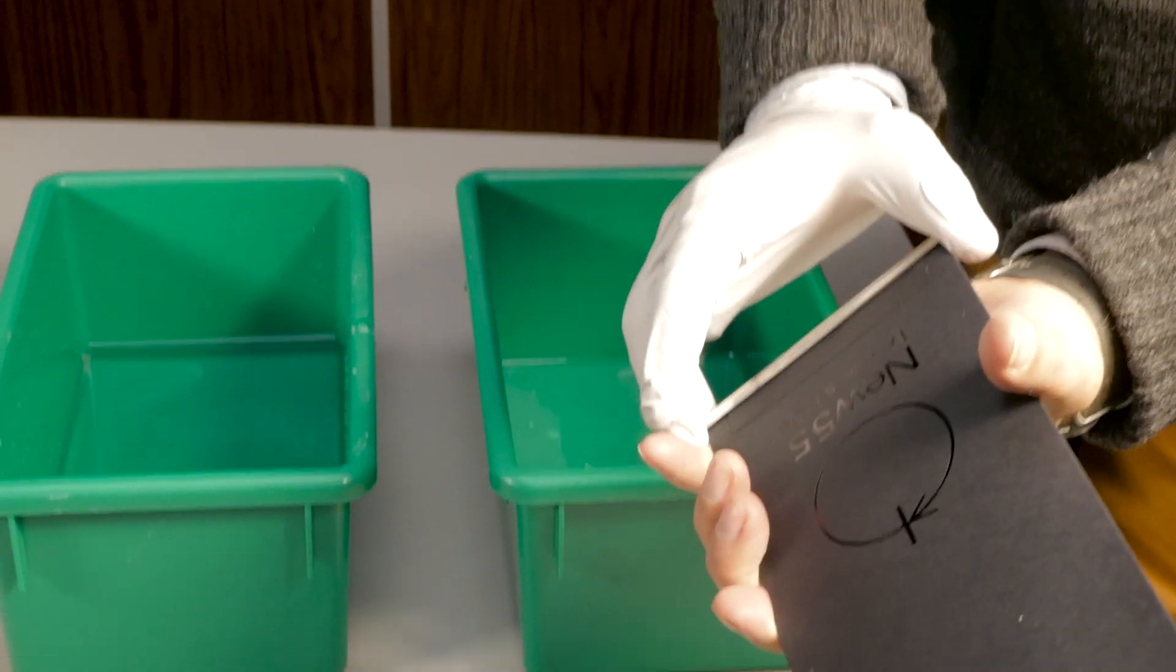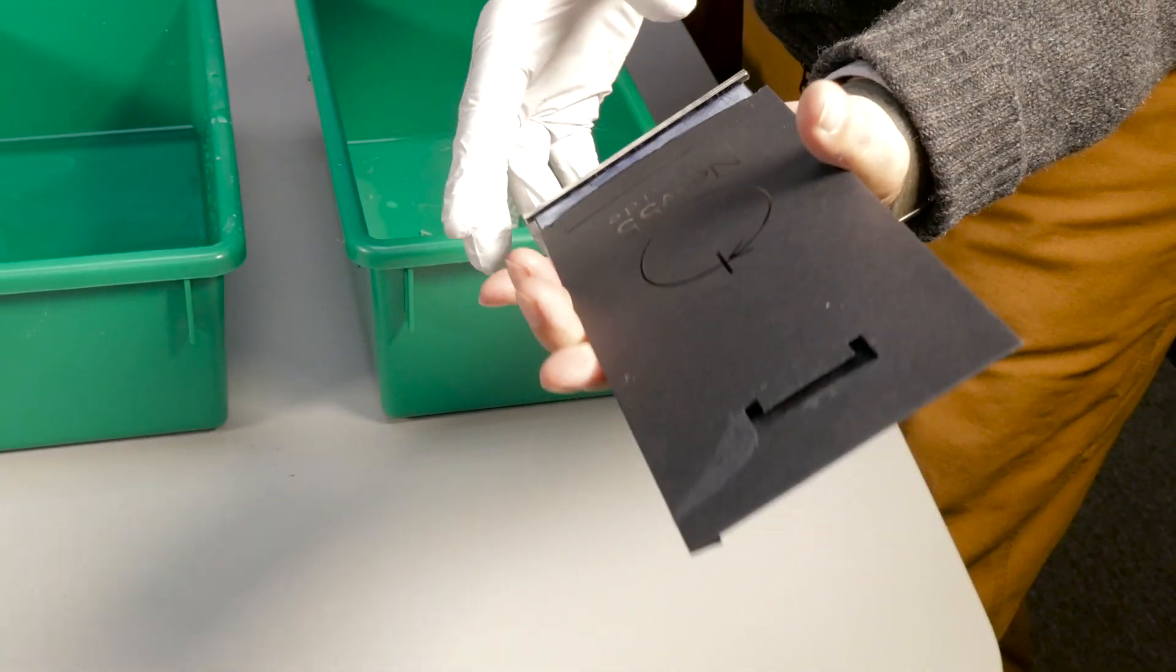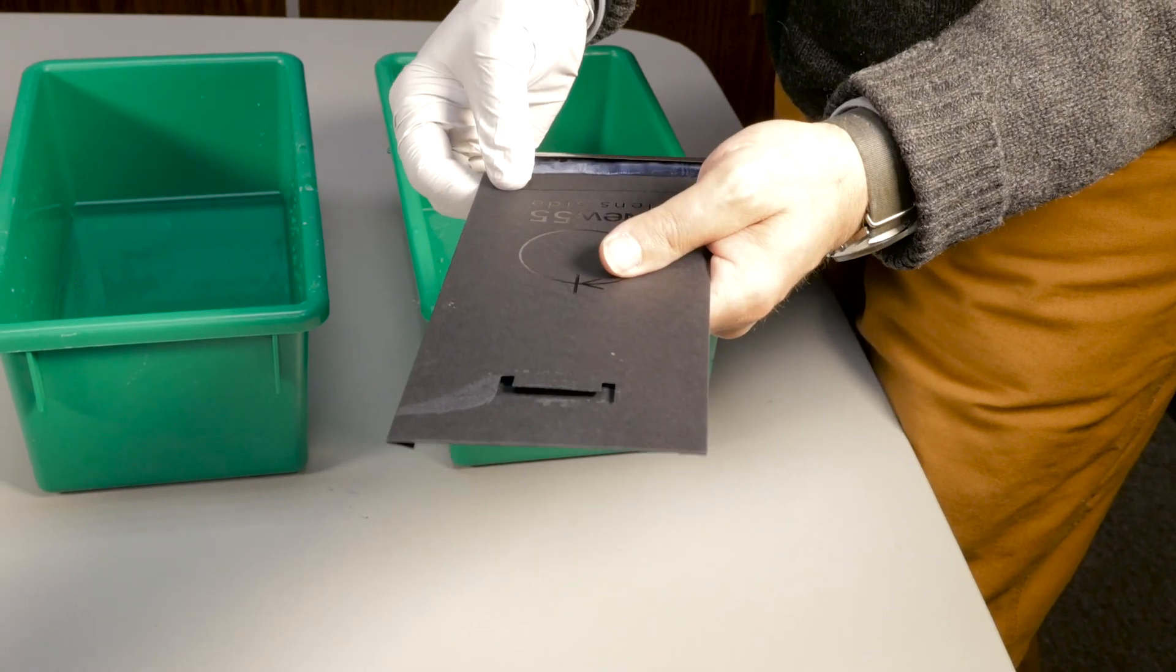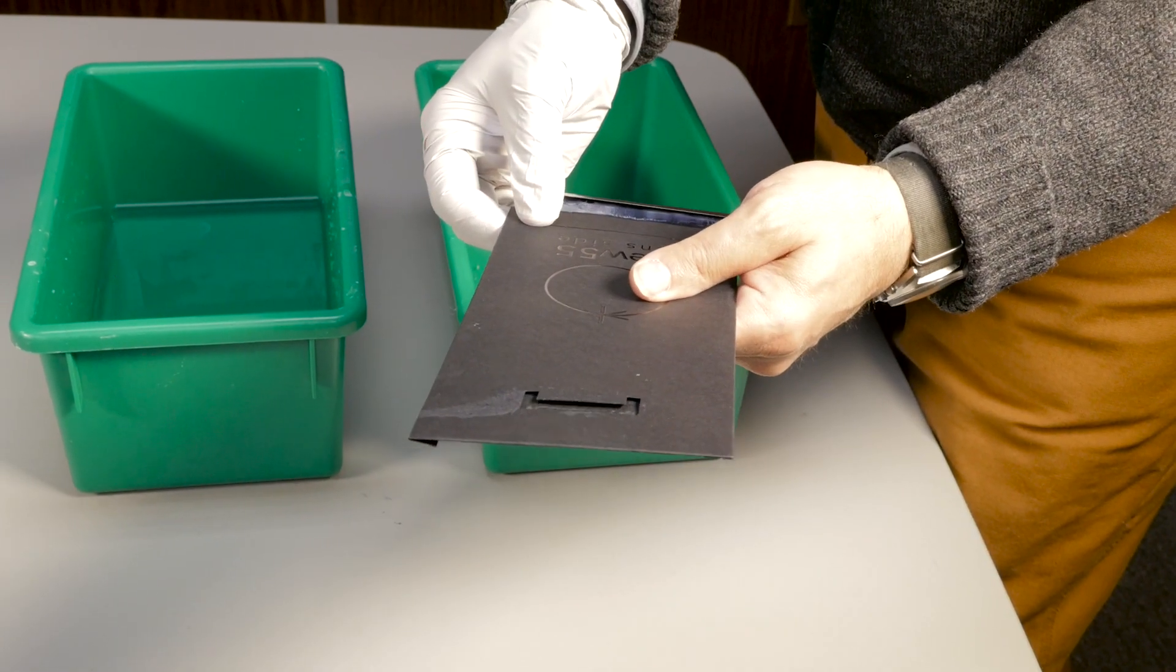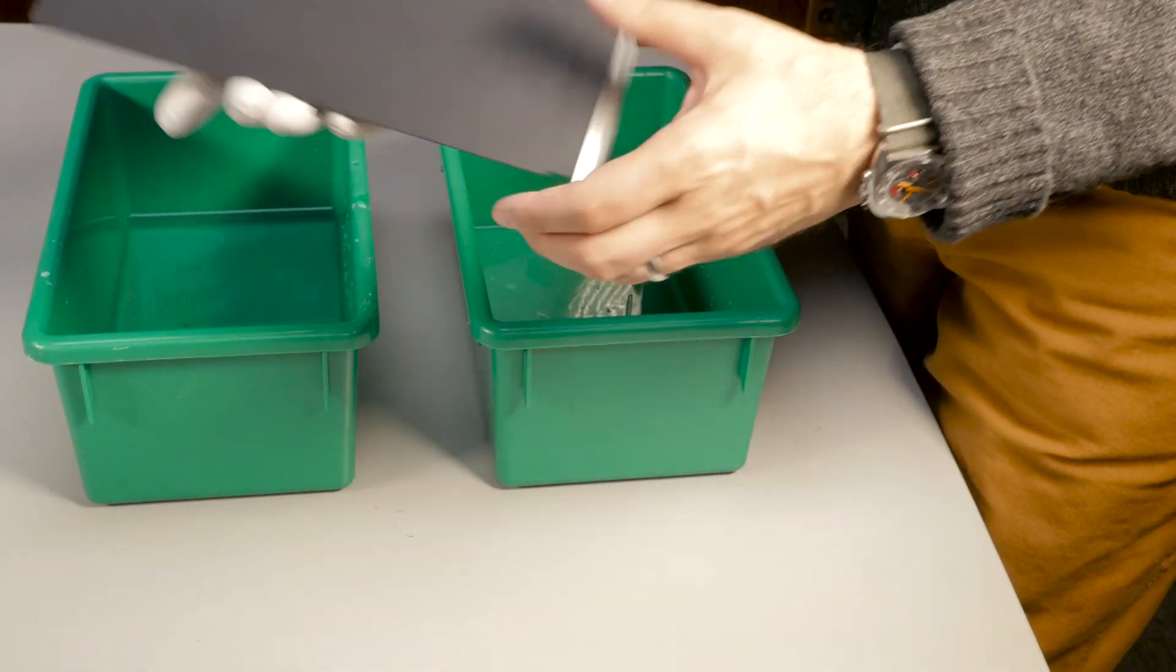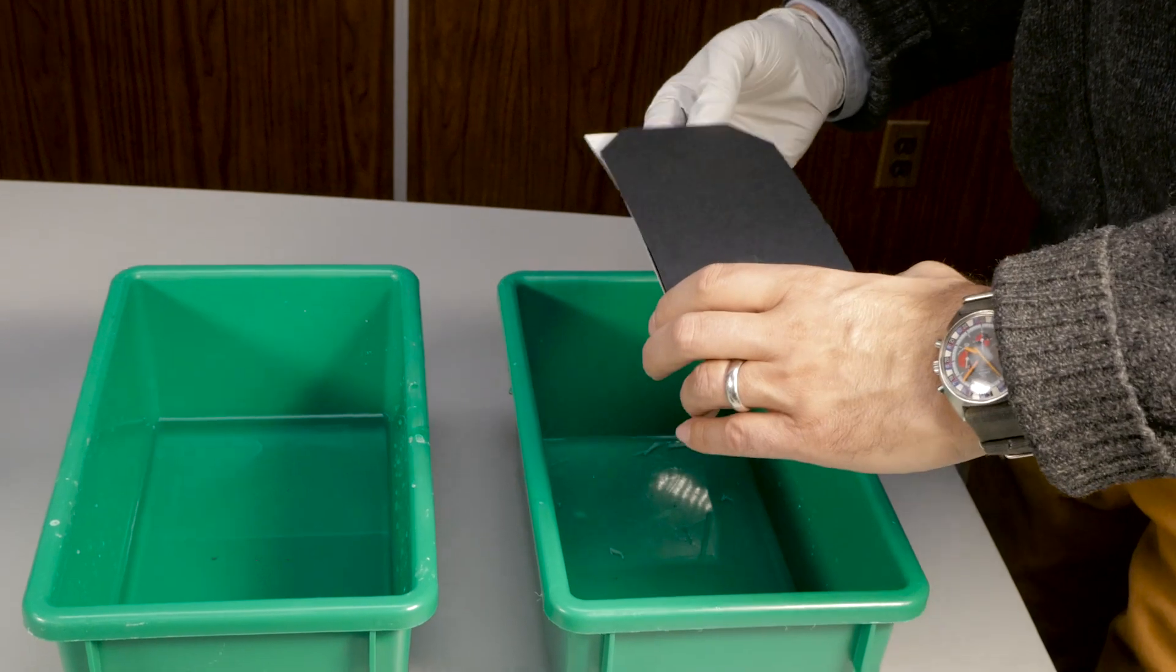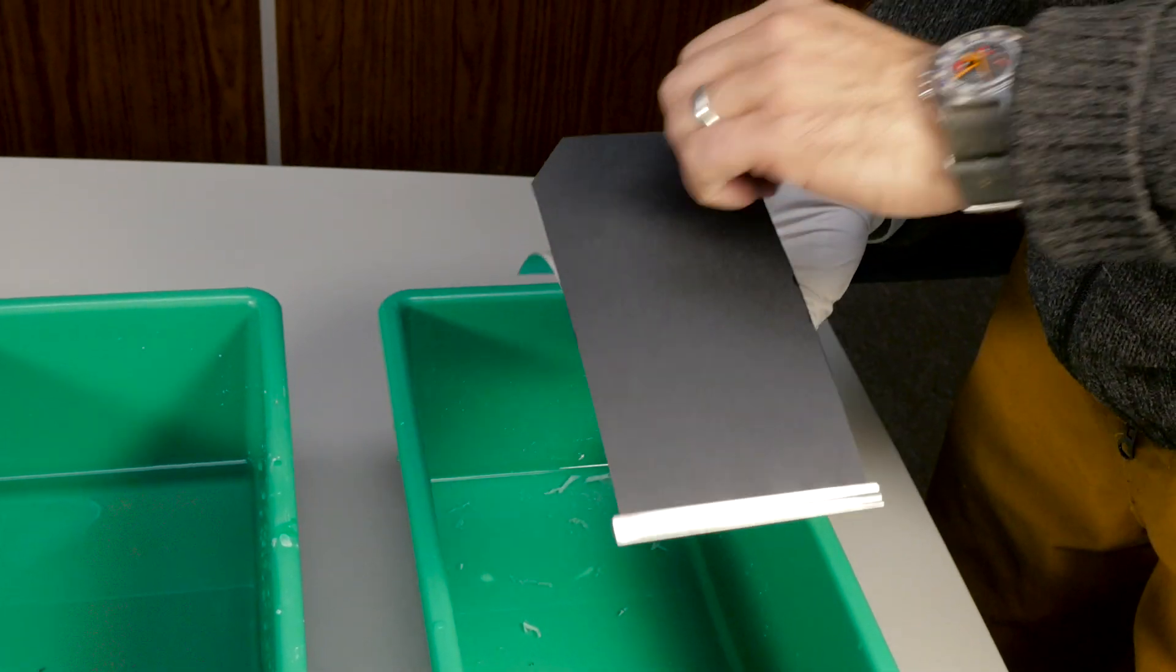When processing time is up I'm going to remove the tongue assembly from the sleeve. I'm going to make sure that I minimize the exposure of the negative before fixing to light by holding the print facing down so the negative faces away from the light. I'm going to do something very important.